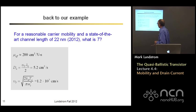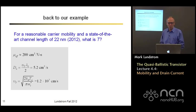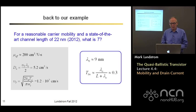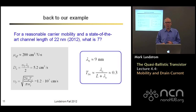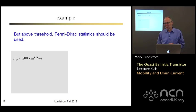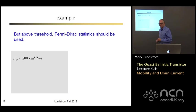Plugging in numbers with the transverse effective mass, we get a mean free path of nine nanometers. Putting that into the expression for transmission gives a transmission of 30%. So that gives us a rough feel for numbers in modern transistors. But it's important to realize that above threshold we really should be using Fermi-Dirac statistics. We just used Maxwell-Boltzmann because it illustrates things and the mathematics is easier. Maxwell-Boltzmann statistics don't really apply because the Fermi level is above the bottom of the band.